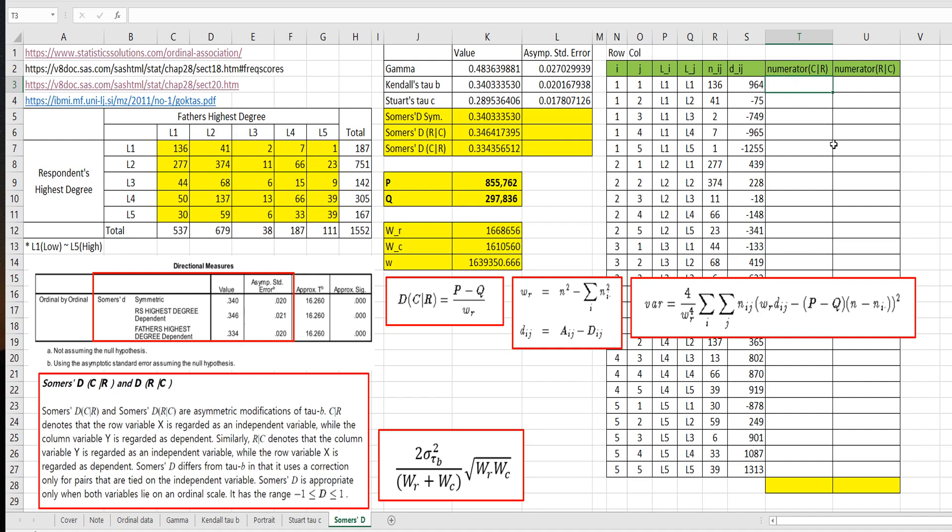For numerator for column given R, let's calculate this part. Nij here, multiply by WR, select here and press F4. Nij here, press F4, multiply by Dij.